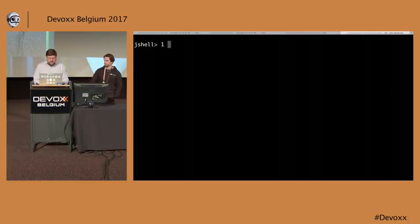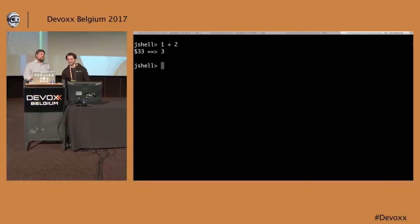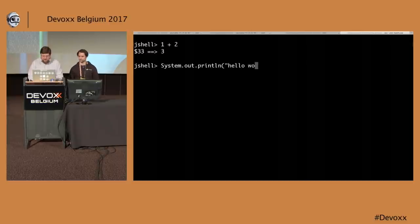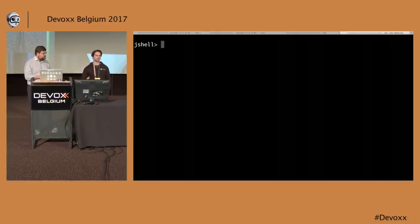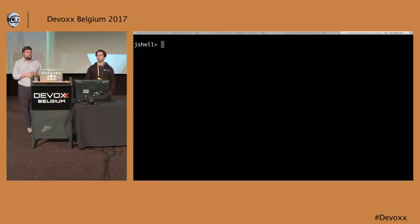JShell can evaluate arbitrary Java expressions — one plus two equals three. We can also put statements in like System.out.println('hello world') and get output on the screen. A lot of programming languages including Python and Scala have this REPL. It's really useful for interactively learning or making use of a new API — import it, have a play, see if it works.